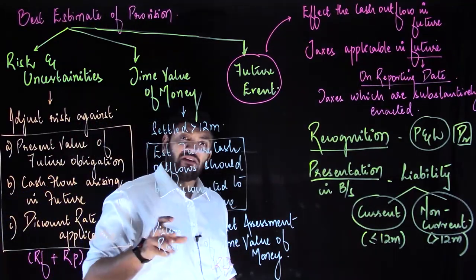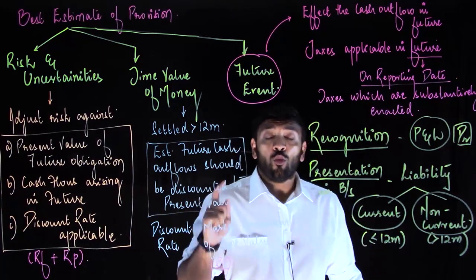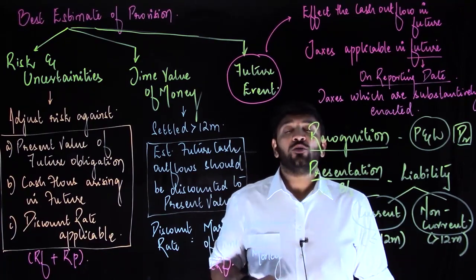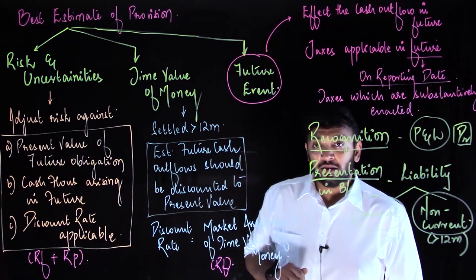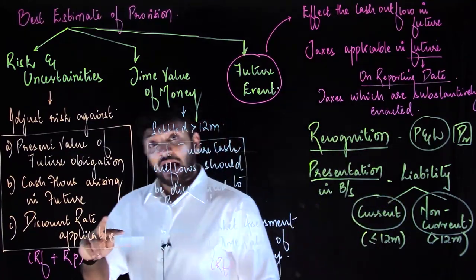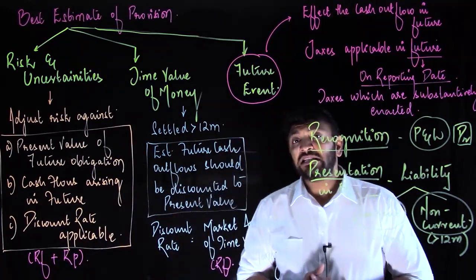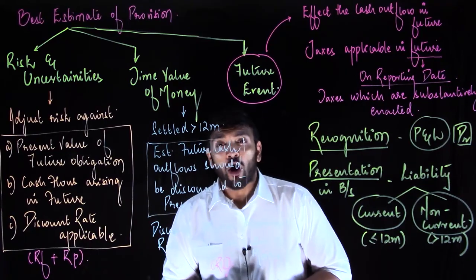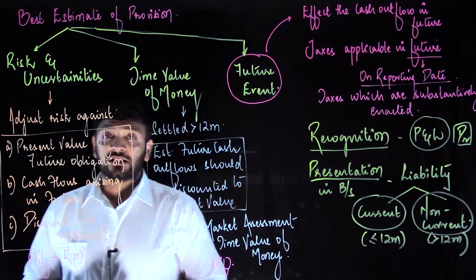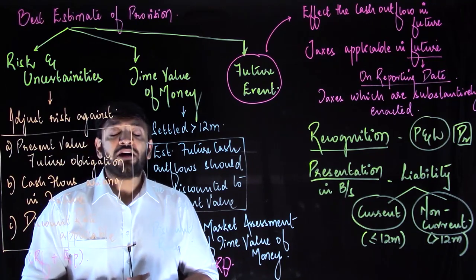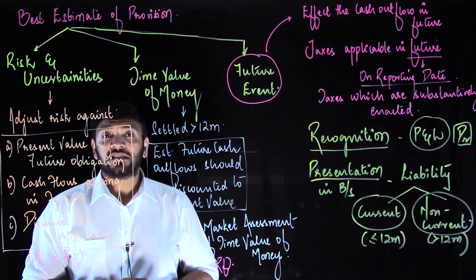Subsequently, if a provision was discounted to present value, we need to consider the impact of the increase in provision value over subsequent periods — called unwinding of discount. There can also be reimbursements, where I have a liability to pay an amount but also a right to receive that amount from someone else. These aspects also need to be considered in the presentation of provisions in financial statements.